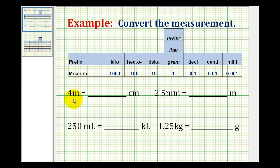For the first example we want to convert four meters to centimeters. Looking at our chart here we can see that a centimeter is 1,000th of a meter. Which means one way to convert from meters to centimeters is to multiply by 100.